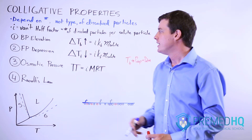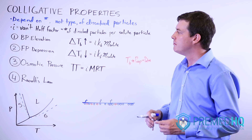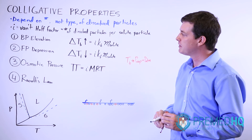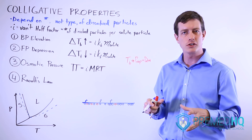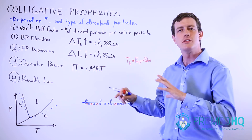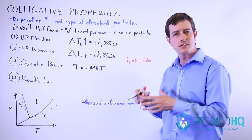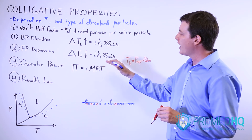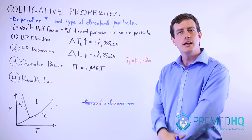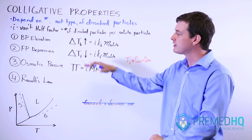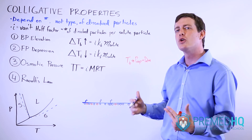Freezing point depression requires lowering the temperature even further in order to freeze a solution. This happens because when a liquid freezes, a lattice-like solid structure must develop where solvent particles interact to form a fairly rigid crystalline or amorphous solid structure. When you add more dissolved particles, they get in the way and interfere with the solvent particles forming that lattice. You must therefore remove more heat energy from the environment for that lattice to form.